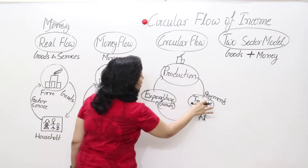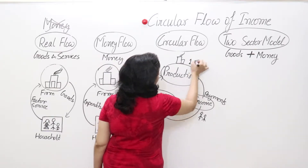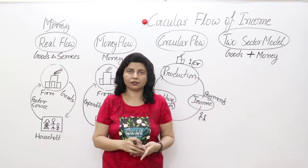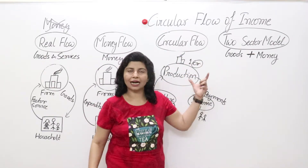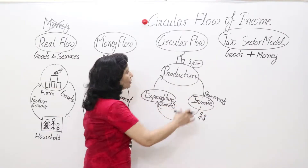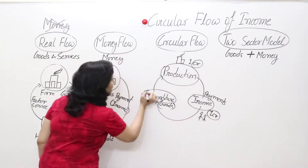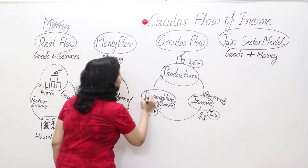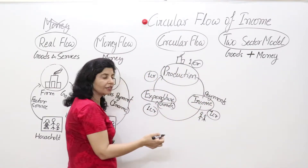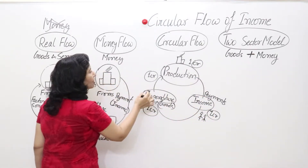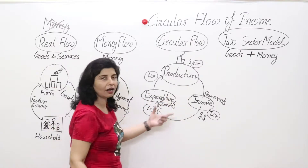Suppose goods worth 1 crore rupees are produced by firms. Then this whole amount is distributed among factor services — again 1 crore. Then this whole 1 crore is spent on goods and services of firms, so again 1 crore reaches these firms. Then again they produce, households receive 1 crore, again they spend 1 crore, and this cycle moves on endlessly. This is known as the circular flow of income.